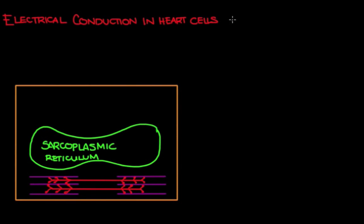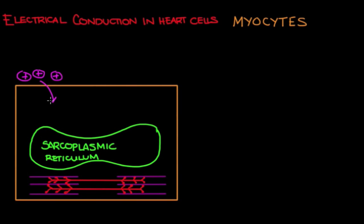Let's talk about electrical conduction in heart cells. The heart is a muscular organ with muscle cells called myocytes — special muscle cells unique to the heart. Just like other muscle cells, they contract after positive ions enter the cell. This influx of positive ions signals the sarcoplasmic reticulum to release calcium ions, which facilitates actin-myosin binding and leads to muscle contraction.